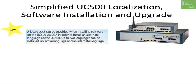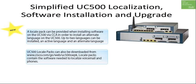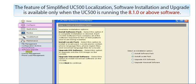This simplification of localization software installation, now available on CCA 3.0, makes it easy for administrators to install primary or alternate languages for the voicemail and phones. With one localization file and a few clicks, an administrator can have supported languages on all phones and prompts in the customer network. The simplified UC500 localization software installation and upgrade feature is available only when the UC500 is running version 8.10 or above.